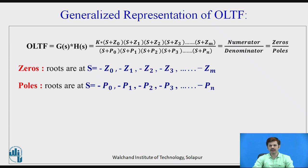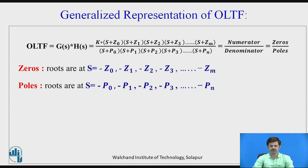At the numerator you can have a polynomial equation or a simplified version of it, and the same applies for the denominator. For this open loop transfer function, the zeros lie at s = −Z₀, −Z₁, −Z₂, up to −Zₘ, and the poles lie at s = −P₀, −P₁, up to −Pₙ.